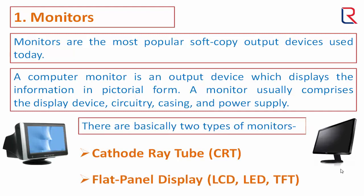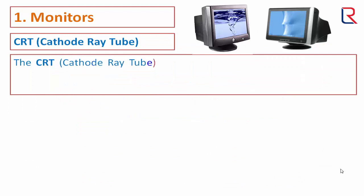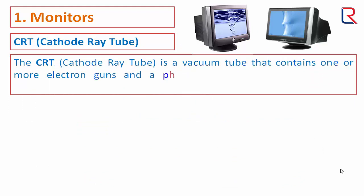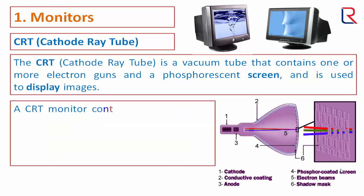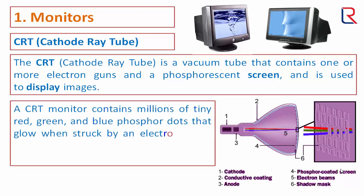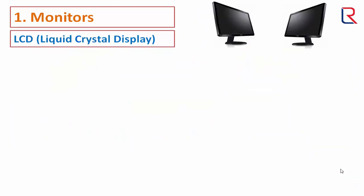CRT: A CRT is a vacuum tube that contains one or more electron guns and a phosphorescent screen, and is used to display images. A CRT monitor contains millions of tiny red, green, and blue phosphor dots that glow when struck by an electron beam that travels across the screen to create a visible image.